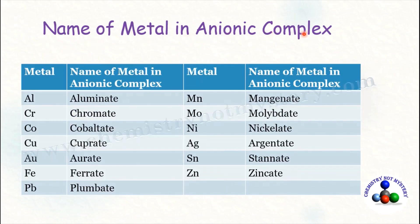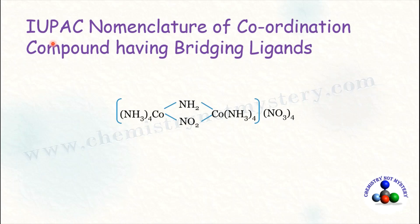Here is a list of metal ions used in anionic complexes. For example, for aluminium, use 'aluminate'; for chromium, use 'chromate'; and as we just used 'ferrate' for iron. You need to go through the list of metal ion names used in anionic complexes.